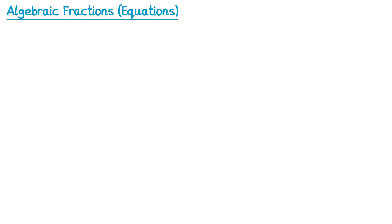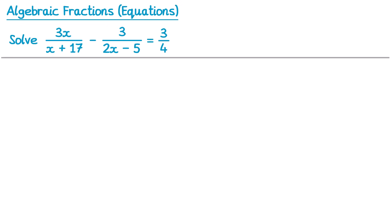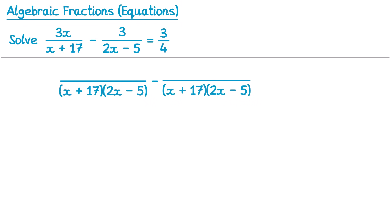Now we're going to look at one more final question. We're going to start this one how we started all of the previous questions — we're going to write the left hand side over a common denominator. So for this one it will be the product of x plus 17 and 2x minus 5. If we compare these first two fractions you can see we've multiplied by 2x minus 5, so if we multiply by 2x minus 5 on the top we get 3x lots of 2x minus 5. And for the right fractions we've multiplied by x plus 17, so we need 3 lots of x plus 17. And the right hand side is equal to 3 over 4.